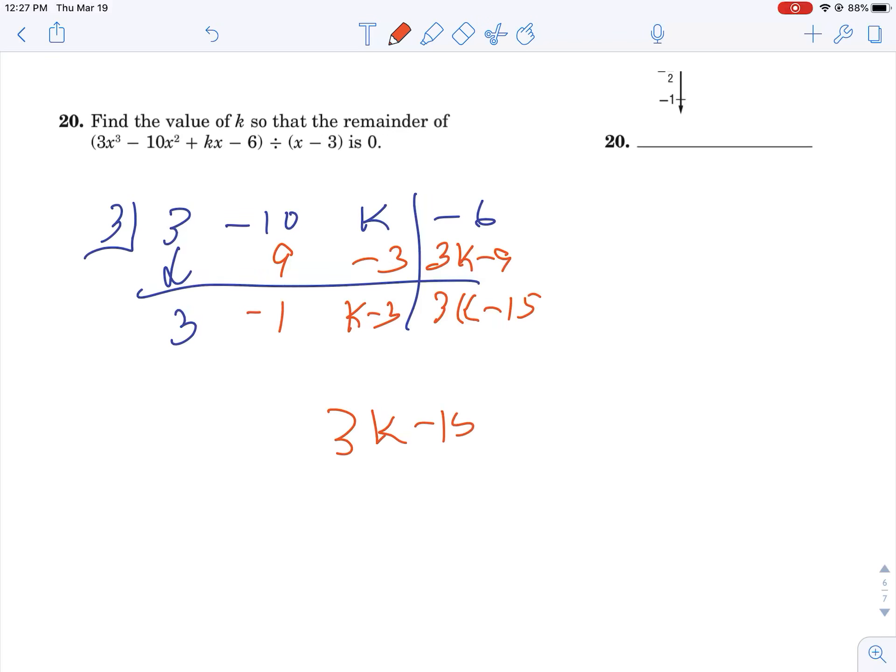We know that we want 3k minus 15 to equal 0, and then the rest is on you. If you have any more questions, I'll post videos with questions, but you got to ask them.